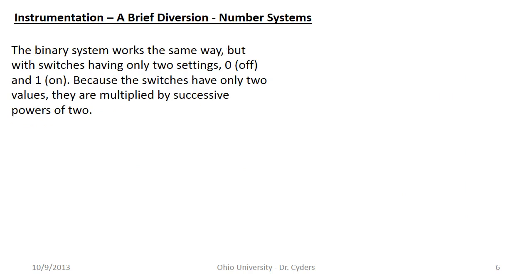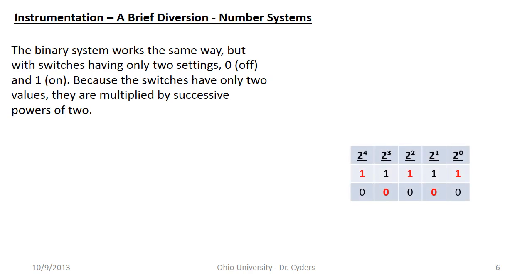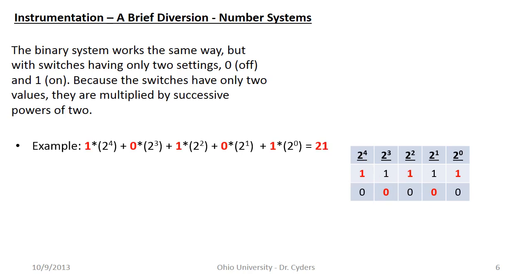In binary, the switches are multiplied by successive powers of 2 instead of 10. For example: 1×2⁰ + 0×2¹ + 1×2² + 0×2³ + 1×2⁴ = 1 + 0 + 4 + 0 + 16 = 21 in decimal. In binary, that's written as 10101. The standard language of digital systems is binary, where we only have 0 and 1.